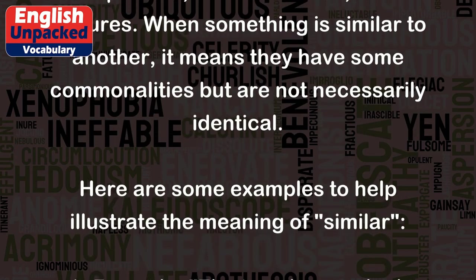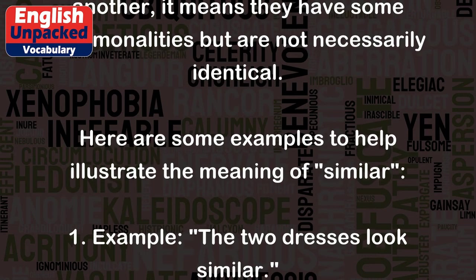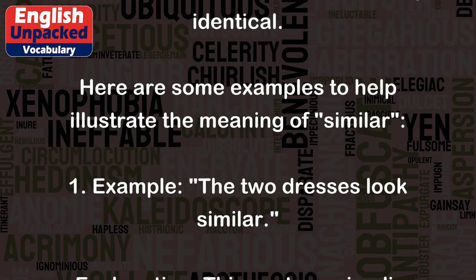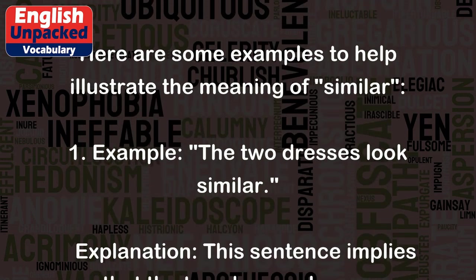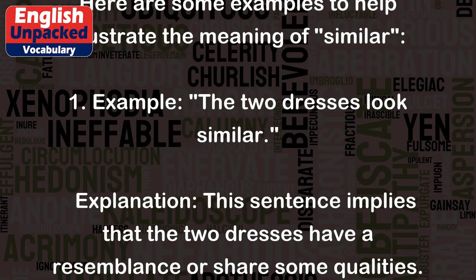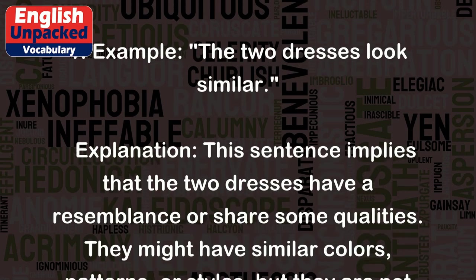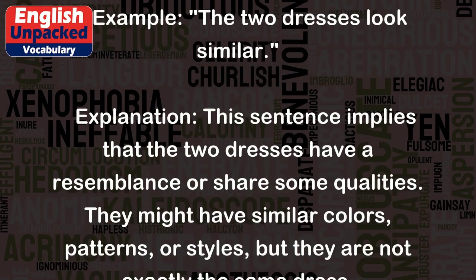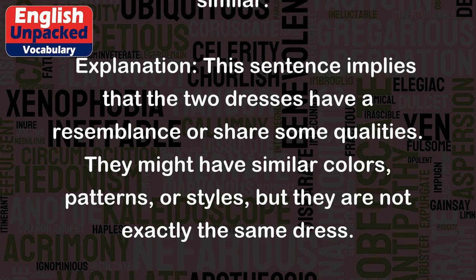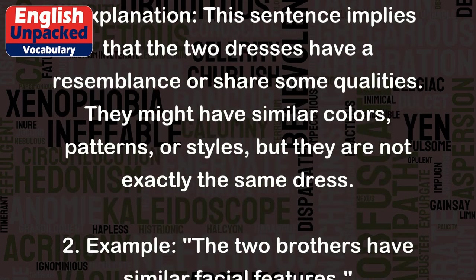Example one: The two dresses look similar. This sentence implies that the two dresses have a resemblance or share some qualities. They might have similar colors, patterns, or styles, but they are not exactly the same dress.